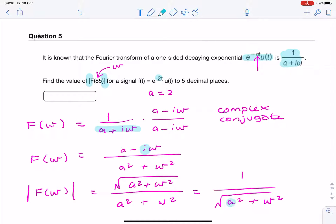Now, we happen to know that a equals 2, and omega equals 85. So, we can simply replace that with 2 squared and 85 squared.